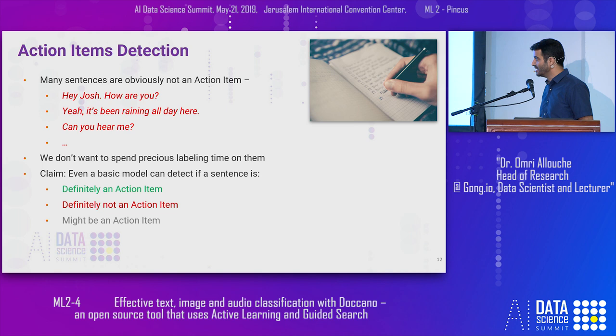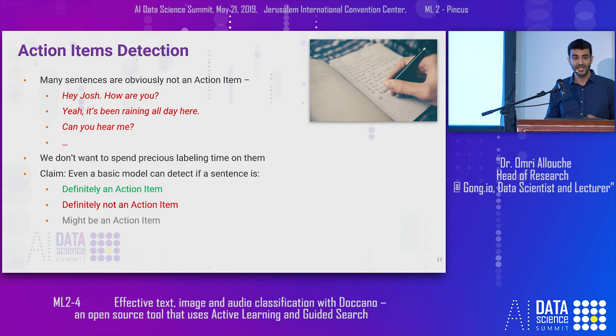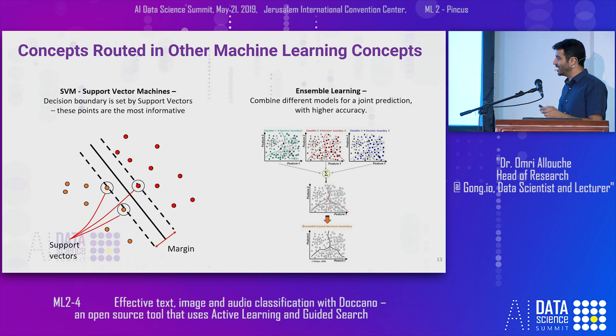My claim is that we can build a model — it doesn't have to be state of the art or very powerful, but it would be able to do a pretty good job in telling us if something is definitely an action item, definitely not an action item, or maybe an action item. This concept is rooted in other machine learning concepts like the margin of support vector machines or ensemble learning — putting together several weak classifiers.